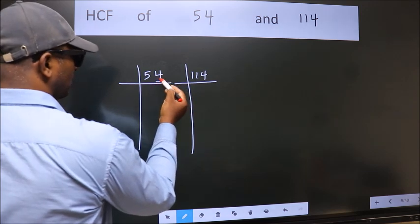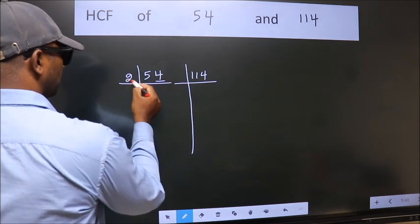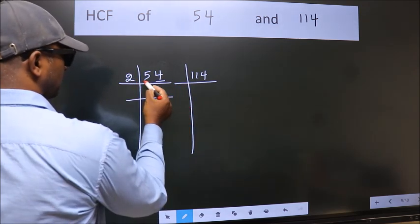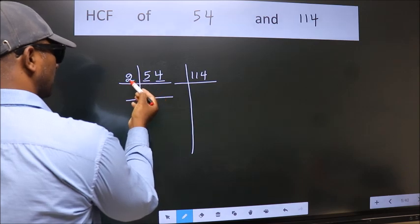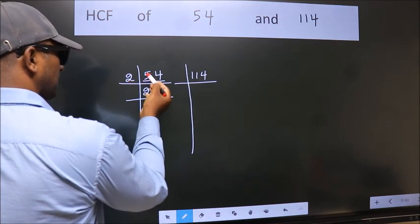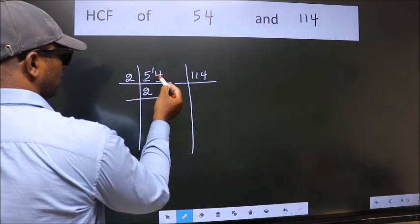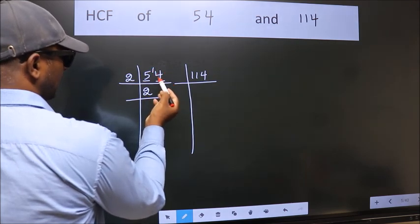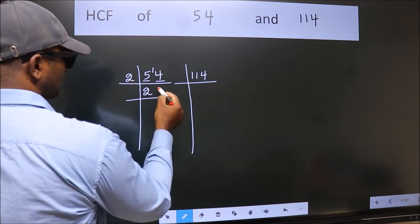Last digit 4, even, so take 2. First number 5, a number close to 5 in the 2 table is 2 times 2 equals 4. 5 minus 4 is 1. When do we get 14 in the 2 table? 2 times 7 equals 14.